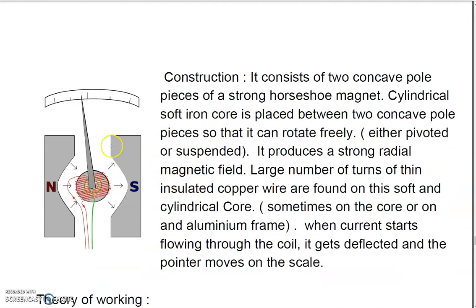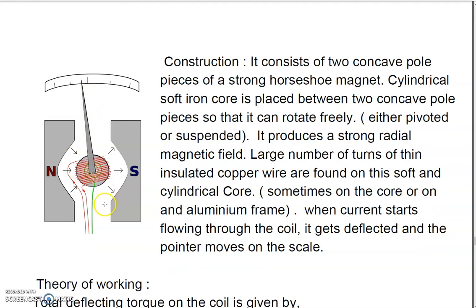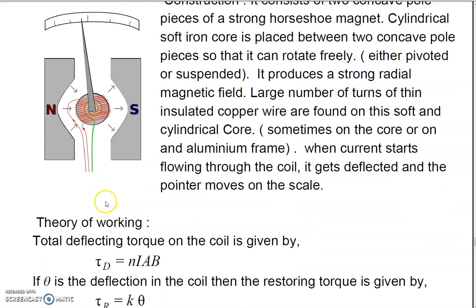To summarize the construction: two concave pole pieces of a strong horseshoe magnet, with a cylindrical soft iron core placed between them, produce a strong radial magnetic field. A large number of turns of thin insulated copper wire are wound either on the core or on an aluminum rectangular frame. Whenever current flows through the coil, it gets deflected, and the pointer attached to the coil also deflects accordingly.